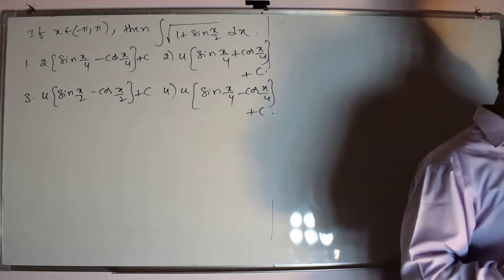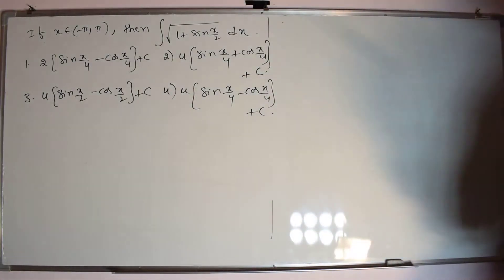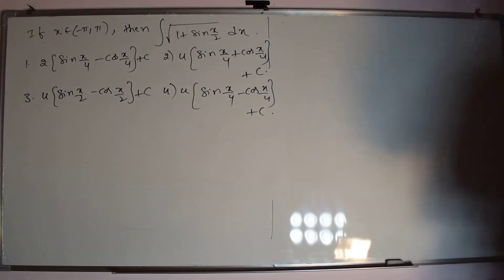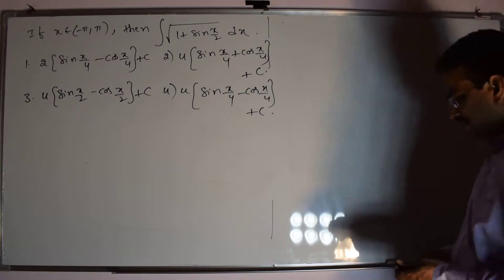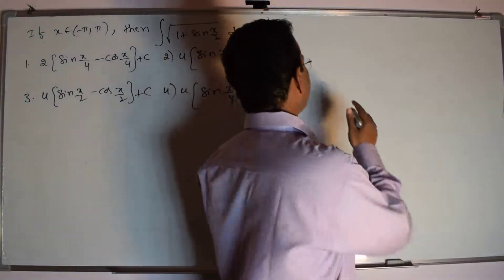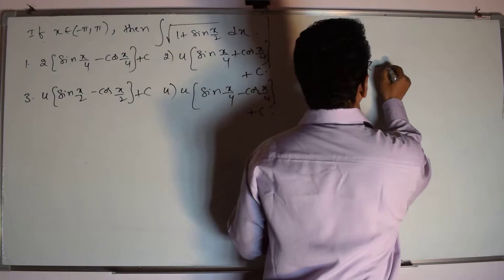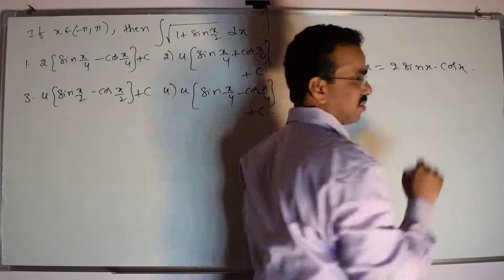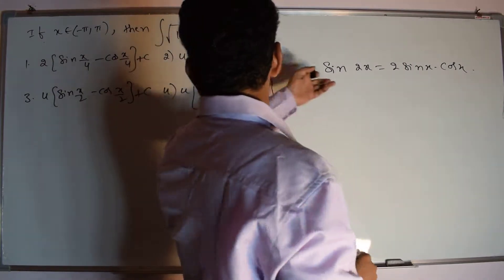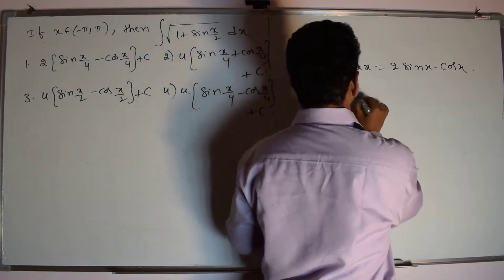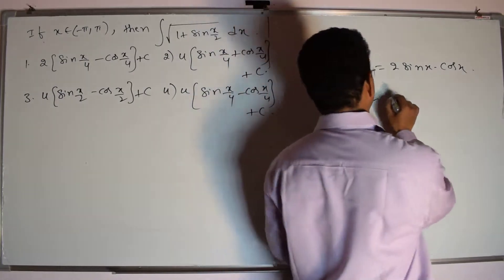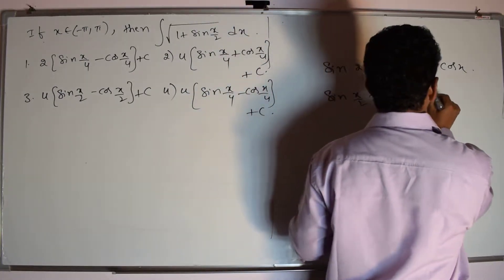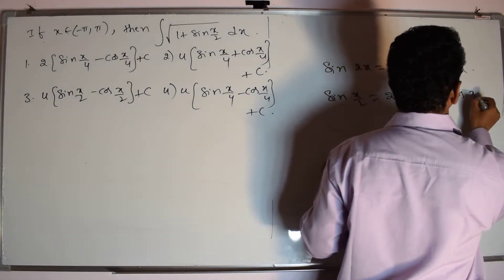How can we eliminate the square root? If we write 1 plus sin(x/2) in the form of a perfect square, we can easily eliminate the square root. The formula for sin(2x) is 2·sin(x)·cos(x). Applying the same formula for sin(x/2): sin(x/2) equals 2·sin(x/4)·cos(x/4), where x is replaced by x/2, and then x/4.